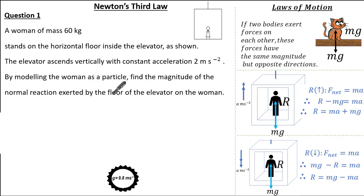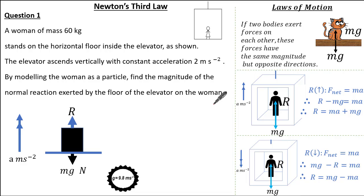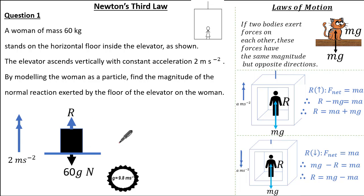Drawing our force diagram focusing on the normal reaction exerted by the floor of the elevator onto the woman: the particle is ascending vertically, so the acceleration is upwards. The surface of the elevator acts below her, the weight acts downward as 60g Newtons, and the normal reaction R acts upward. We know the upward acceleration is 2 m/s² and the weight is 60g Newtons, and we need to work out the normal reaction.